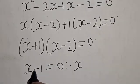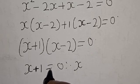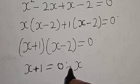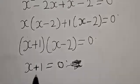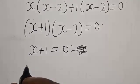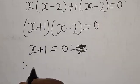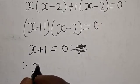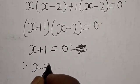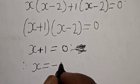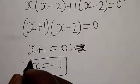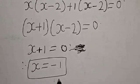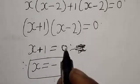We have x plus 1 equals zero, therefore x equals minus 1. And from x minus 2 equals zero, x equals 2. Those are the values of x.